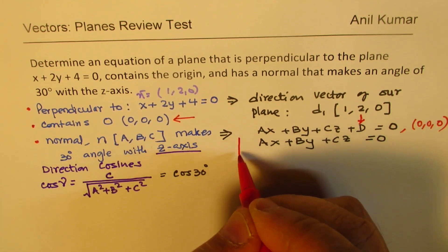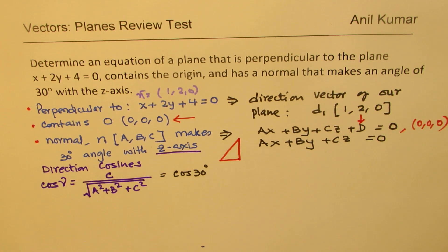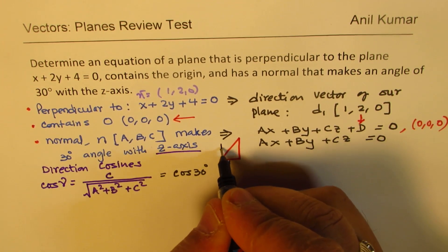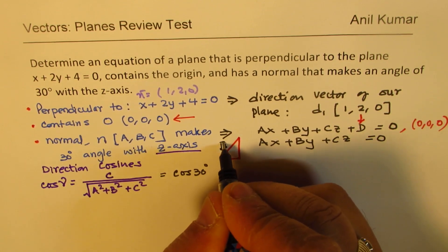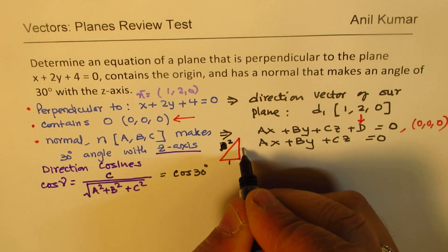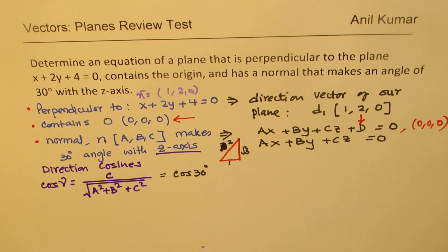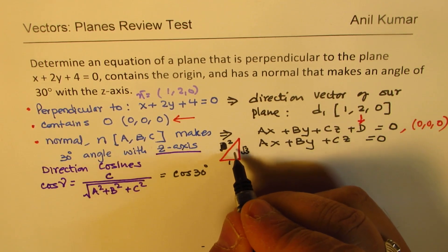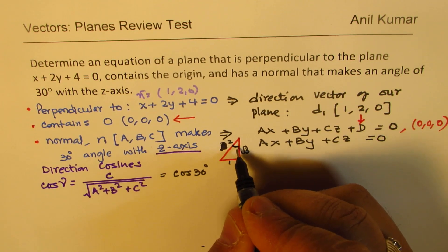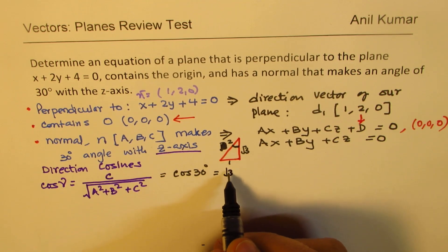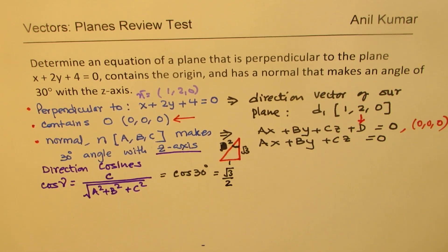So cos of 30 degrees — we can look into our special triangle. It always helps. Drawing the 30-60 triangle, we have 30 degrees right there. Cos of 30 degrees is basically equal to square root of 3 over 2. That is the value of cos of 30 degrees. From here we get this relation.